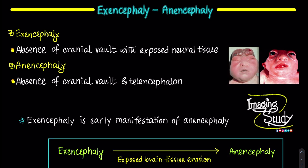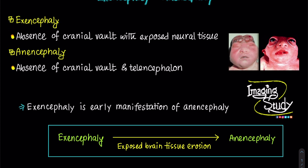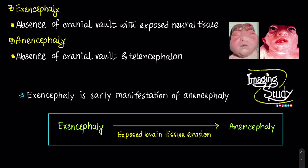Anencephaly was the first fetal anomaly diagnosed by prenatal ultrasound in 1972. Exencephaly, the early manifestation of anencephaly, is the absence of cranial vault with exposed neural tissue. Anencephaly is the absence of cranial vault above the bony orbits associated with the absence of telencephalon, more specifically cerebral hemispheres and midbrain.